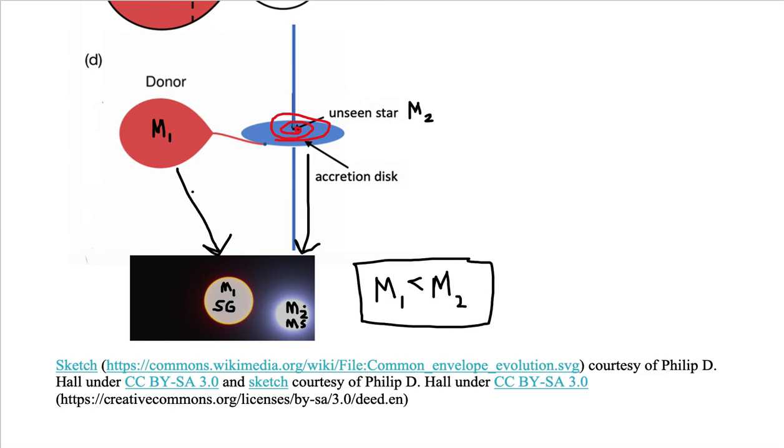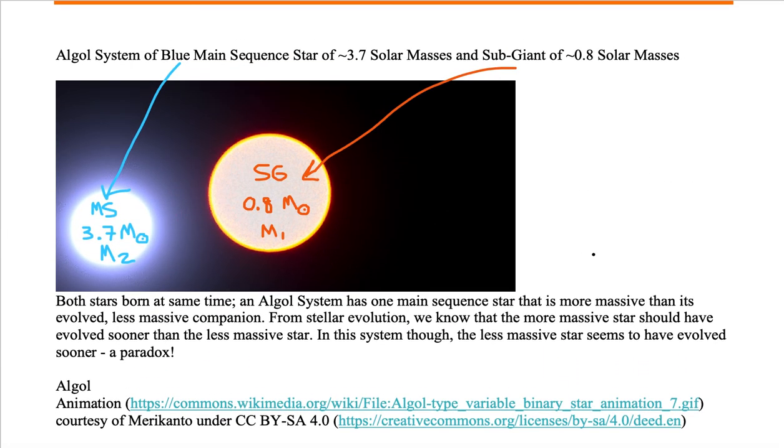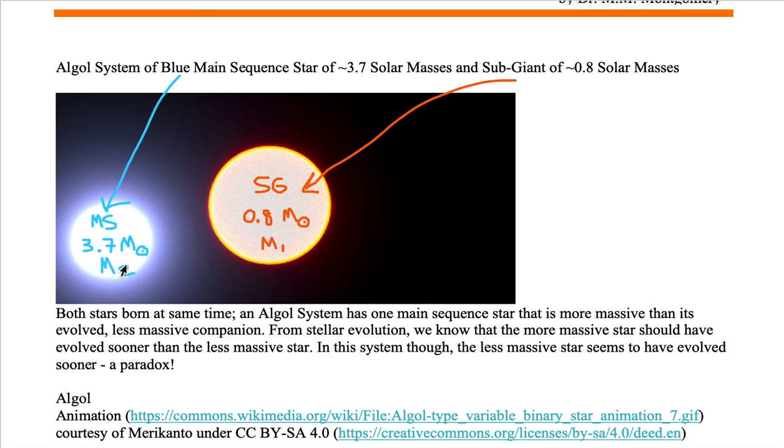Our more massive star is the blue-white main sequence star, which I have labeled M-sub-2. The reason why it's labeled M-sub-2, is because when accretion finally starts again, we're going to see mass transfer from M-sub-2 go to M-sub-1, forming an accretion disk around M-sub-1, falling onto M-sub-1. By this time, when accretion turns back on, this subgiant will have evolved off the main sequence. It will become a white dwarf.